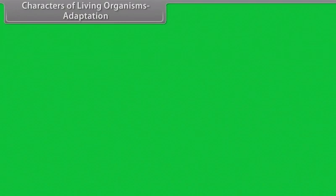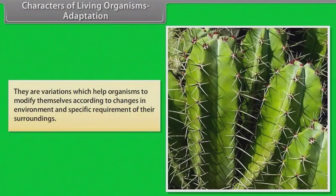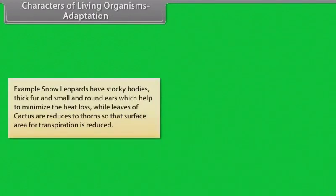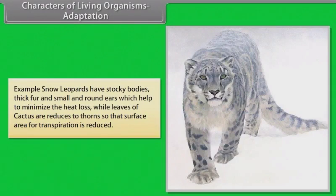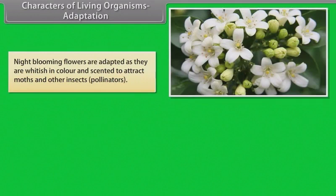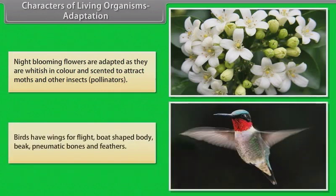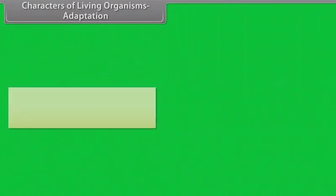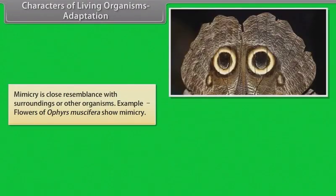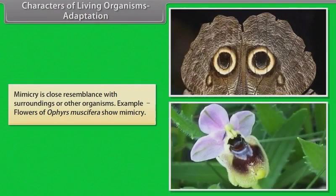Adaptations are variations which help organisms to modify themselves according to changes in environment and specific requirements of their surroundings. For example, snow leopards have stocky bodies, thick fur, and small round ears, which help minimize heat loss. Leaves of cactus are reduced to thorns so that the surface area for transpiration is reduced. Night-blooming flowers are whitish in color and scented to attract moths and other insect pollinators. Birds have wings for flight, a boat-shaped body, beak, pneumatic bones, and feathers. Mimicry is a close resemblance with surroundings or other organisms — for example, flowers of Ophrys musifera show mimicry.